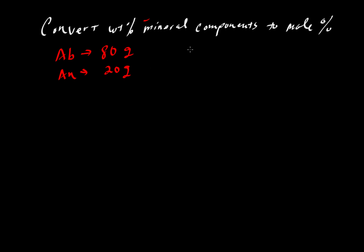What kind of composition would you have? How would you write out the composition? If we had pure albite, that would be NaAlSi3O8. And then if we had pure anorthite, that is CaAl2Si2O8.